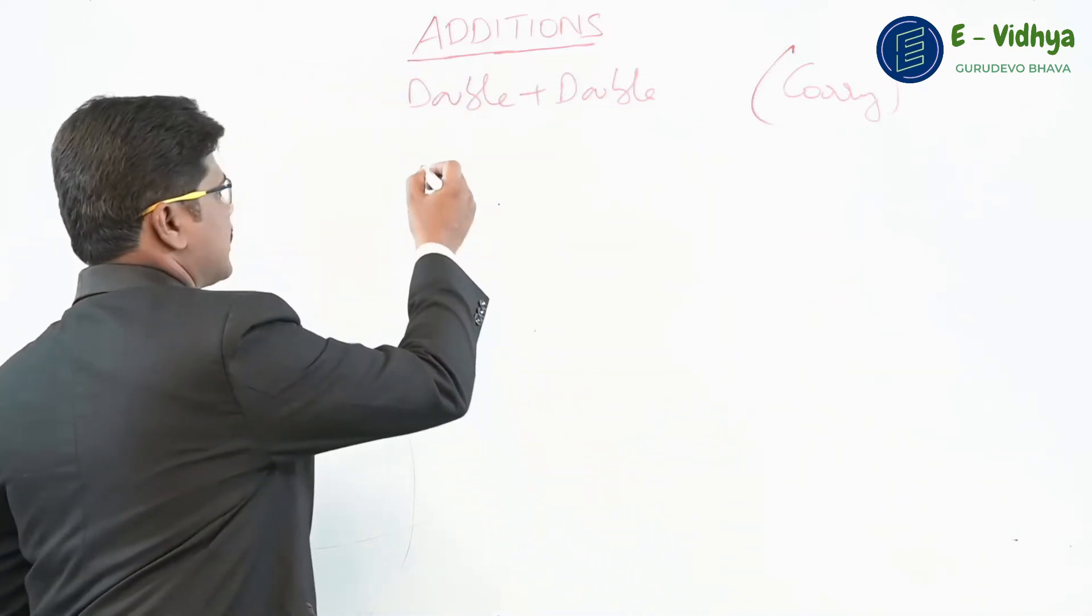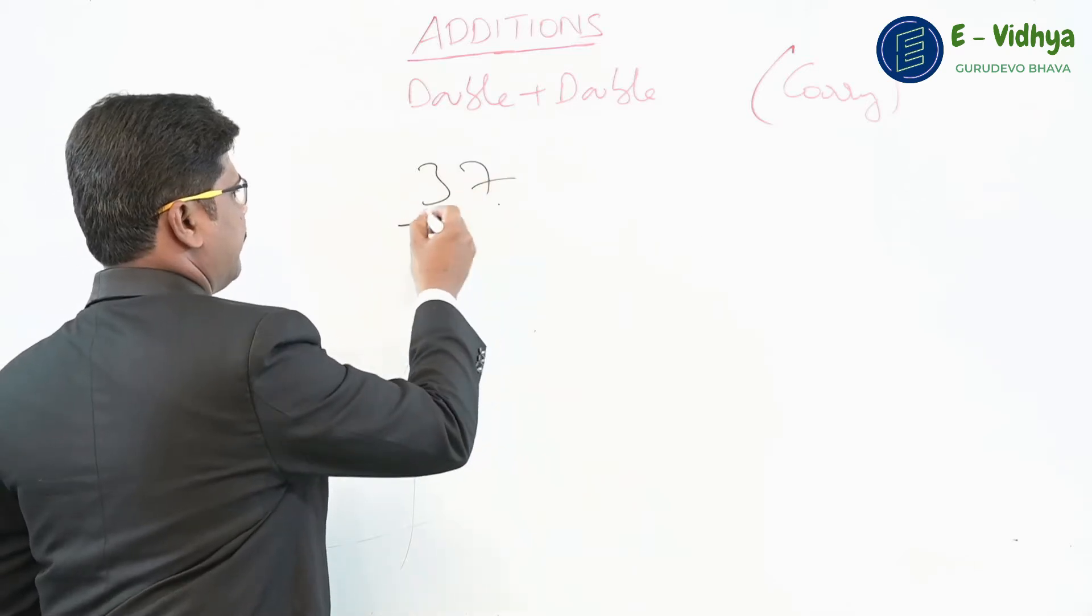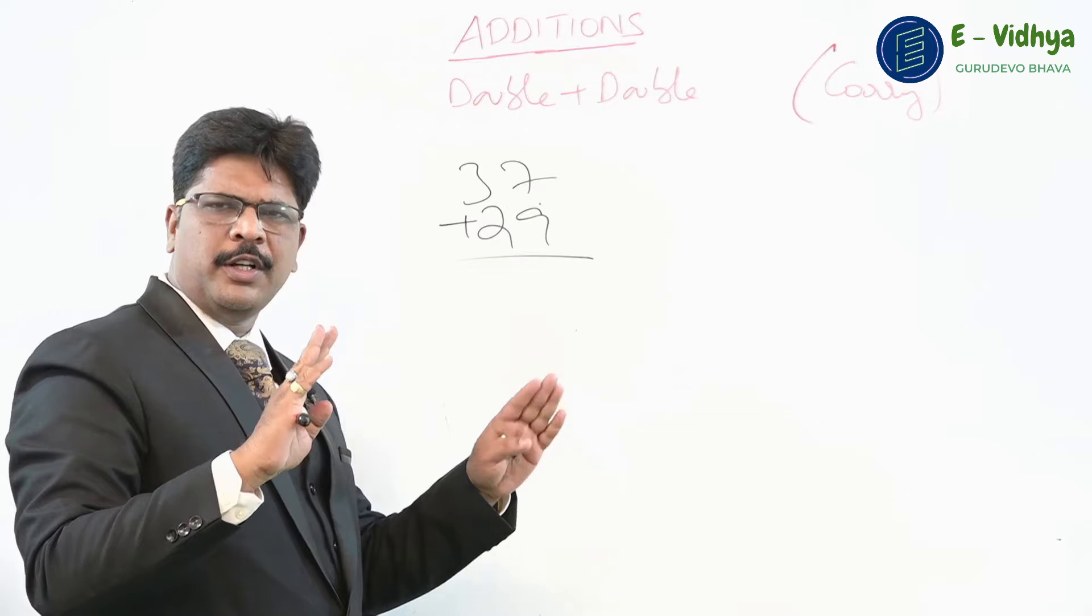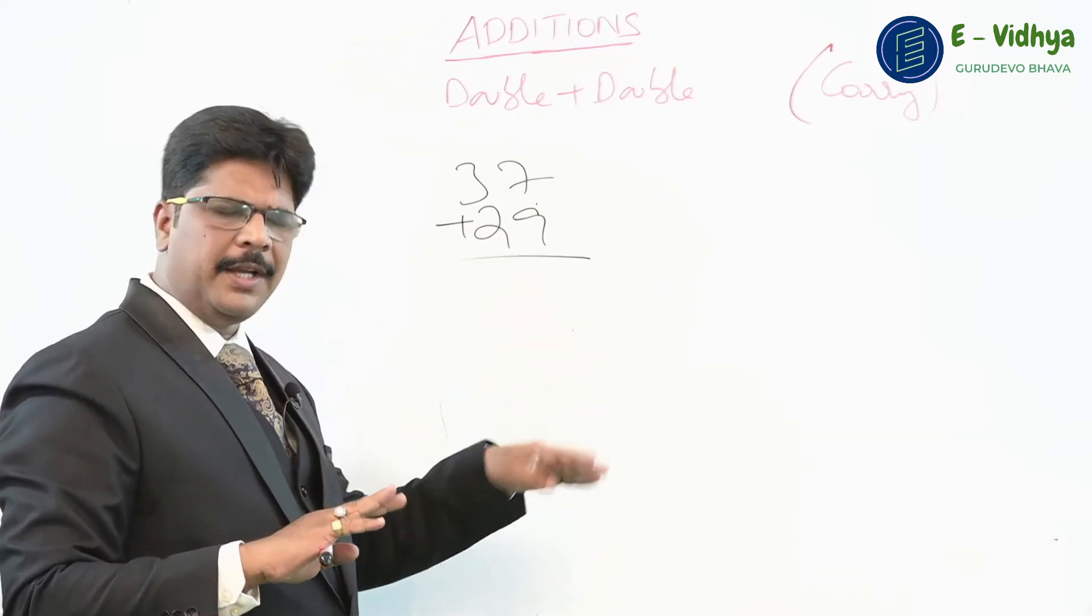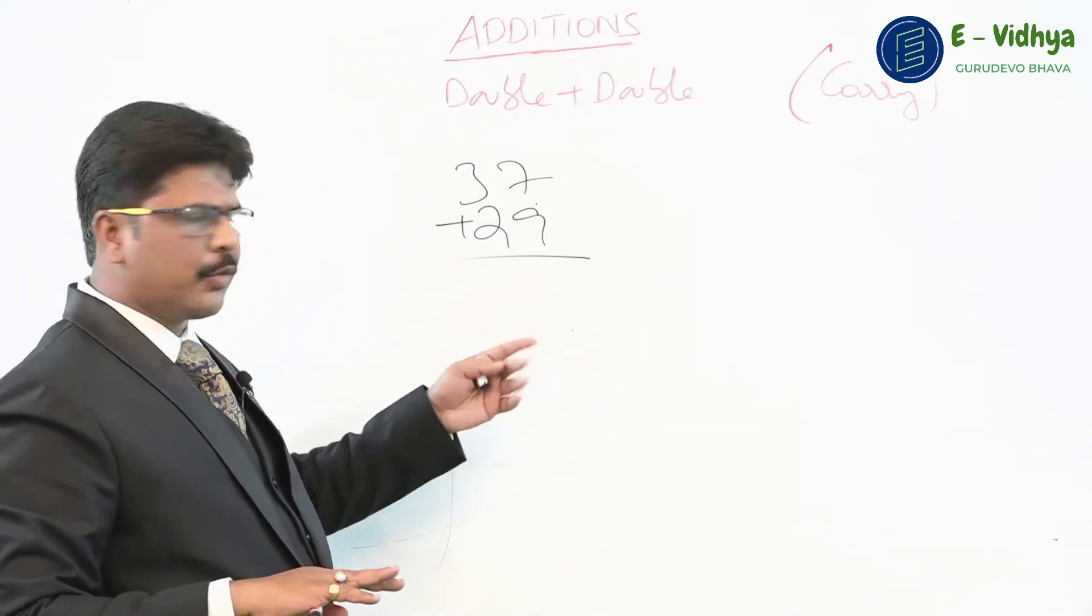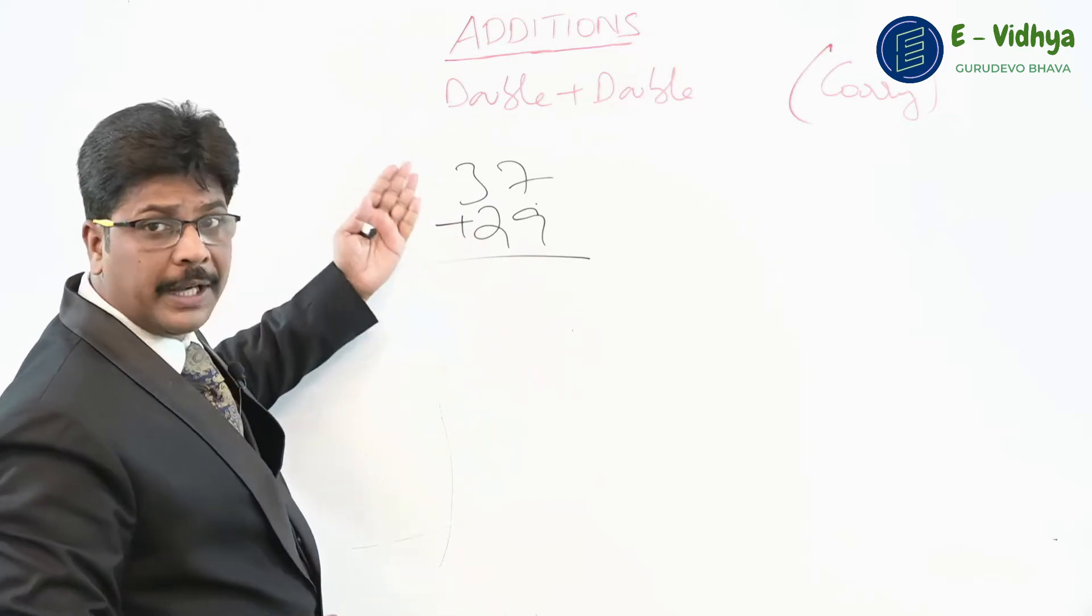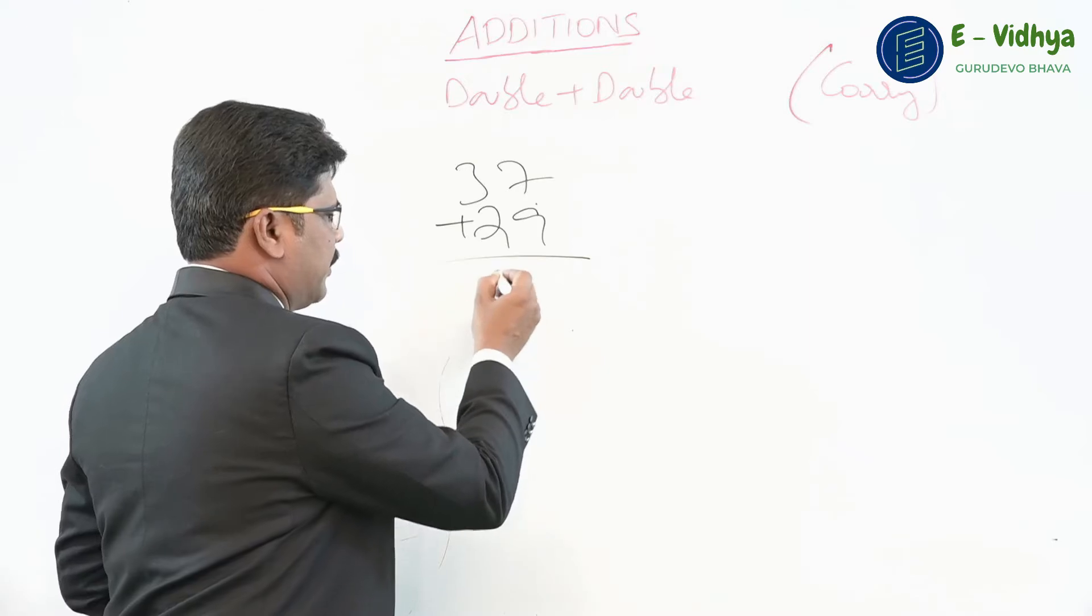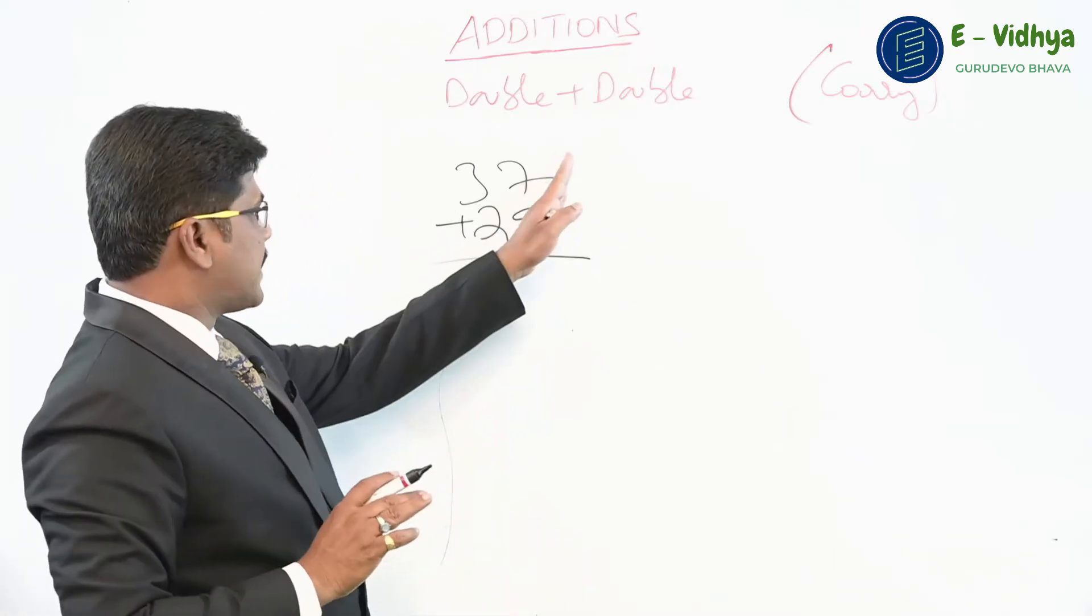Let us take a problem like this: something like 37 plus 29, how much? We apply the same technique what we learned in the previous double plus single carry type. But here we have one digit more. Now, first look at this. Add from left to right, first add 3 plus 2, how much you get? You get 5. Initially show the basic method, put 5 there.